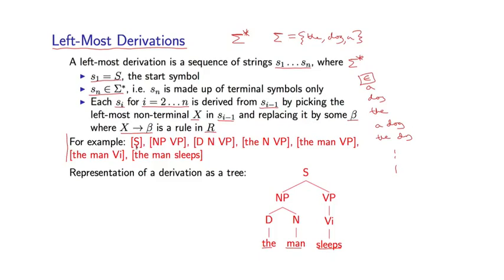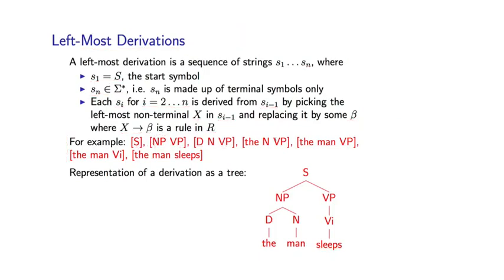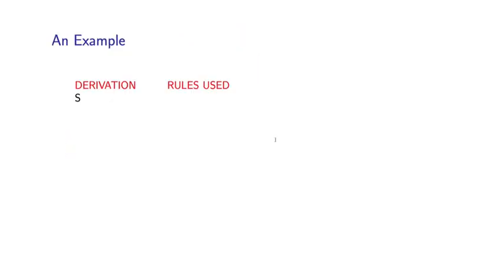So here's an example of a derivation. And actually, I'll go over this example in much more detail on the next slide. So we start off with S. That's the first string. The next string in this derivation is NP VP. And that's because I've taken S and replaced it by NP VP. And then I'll take this NP and replace it by DN, and so on and so on. Let me actually go to an example where I'll illustrate this a little bit more carefully.